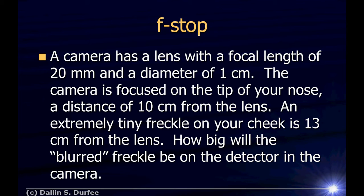A camera has a lens with a focal length of 20 millimeters and a diameter of one centimeter. The camera is focused on the tip of your nose, a distance of 10 centimeters from the lens. An extremely tiny freckle on your cheek is 13 centimeters from the lens. How big will the blurred freckle be on the detector in the camera?